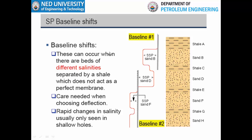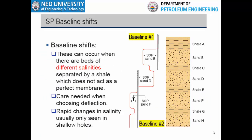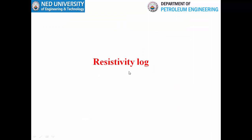There are also cases when we do not have a single shale baseline — the baseline shifts. As seen in the log, the top section has a different shale baseline and the bottom section has a different baseline. This happens because of different water salinities at different depths in the well, which is more common in shallower wells.